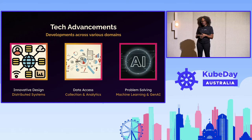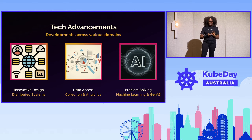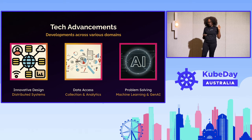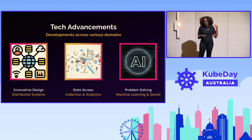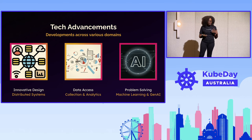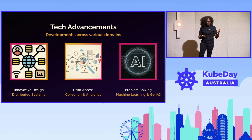Historically monoliths were fantastic, but if we had to fix something we had to fix the whole stack. Now with distributed systems we no longer have to do that — we look at things at the micro level. We have a lot of access to data, and there's been a lot of innovation in the way that data is collected and analyzed. And no conversation is complete these days without AI. AI has been around a lot longer than you might think — the GenAI PR team has done their job well.